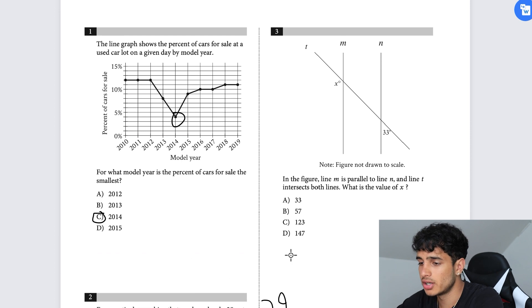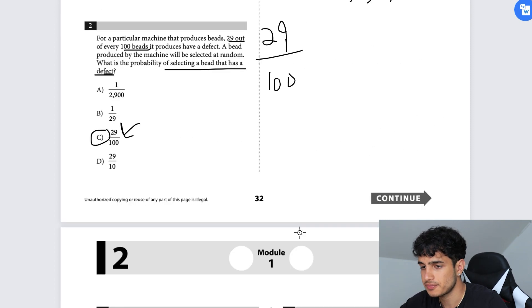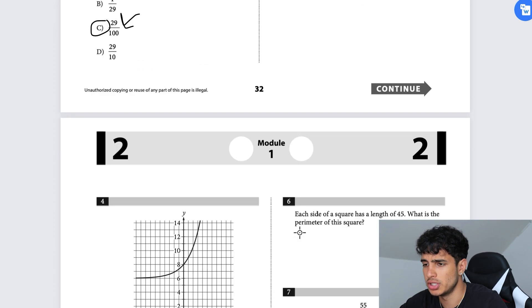In the figure, line M is parallel to line N and line T intersects both lines. What is the value of X? This would be a 90-degree angle, so we can eliminate A and B. If this is 33 degrees, that means this is also 33 degrees. We know that this overall angle has to be 180, and these are supplementary angles. So 33 plus X equals 180. Subtract 33 and we're left with 147.